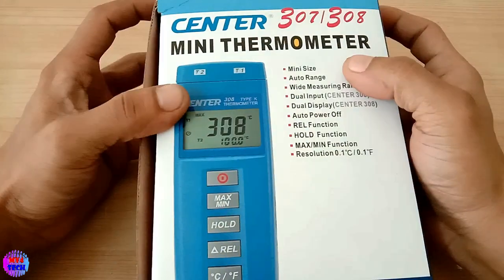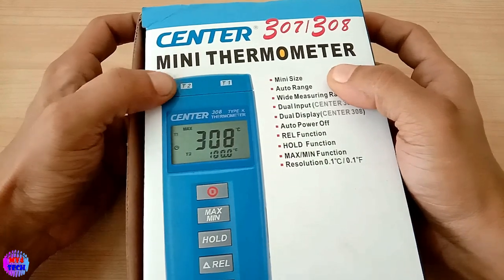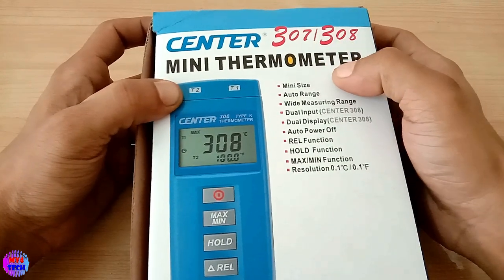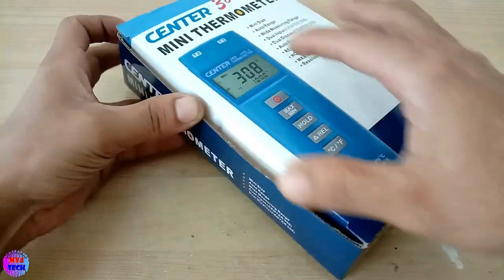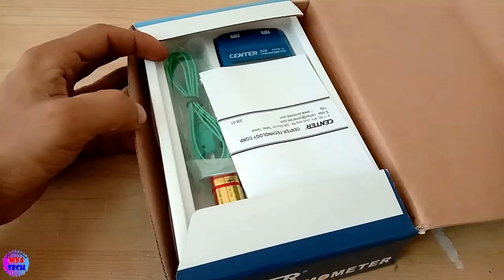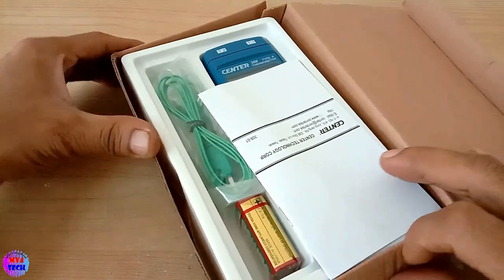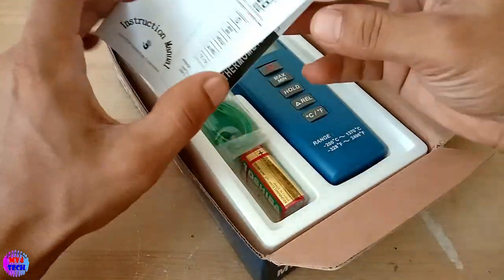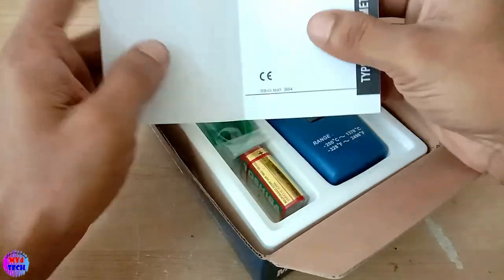This is the Center Mini Thermometer. Let me open the packaging. Inside we have the cutting pad in the back, and this is the manual.